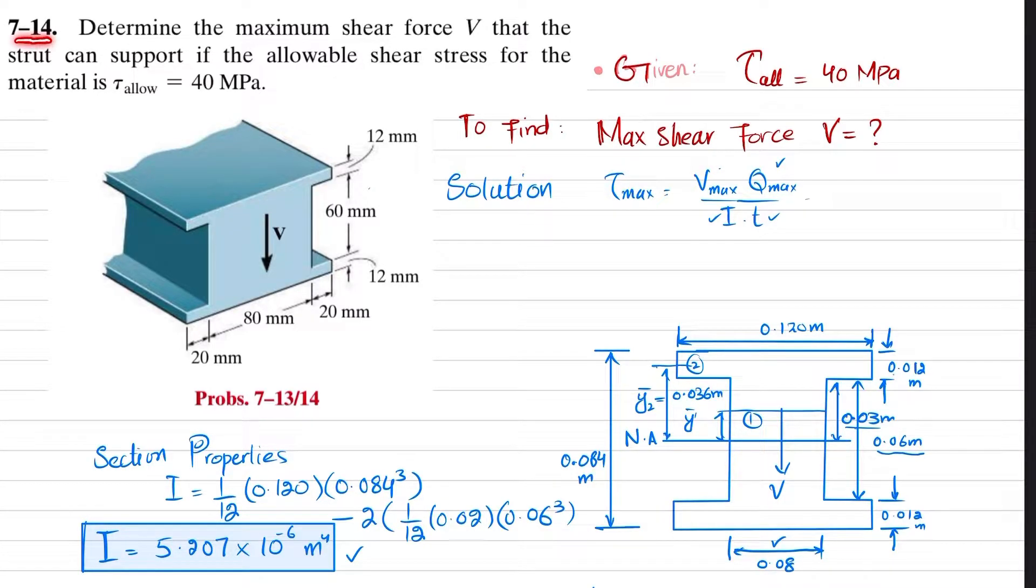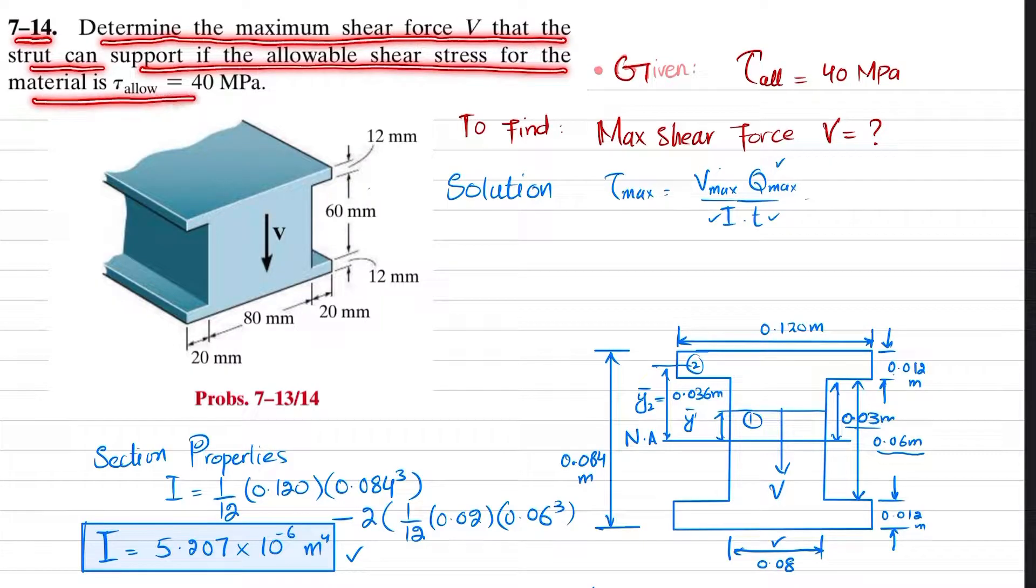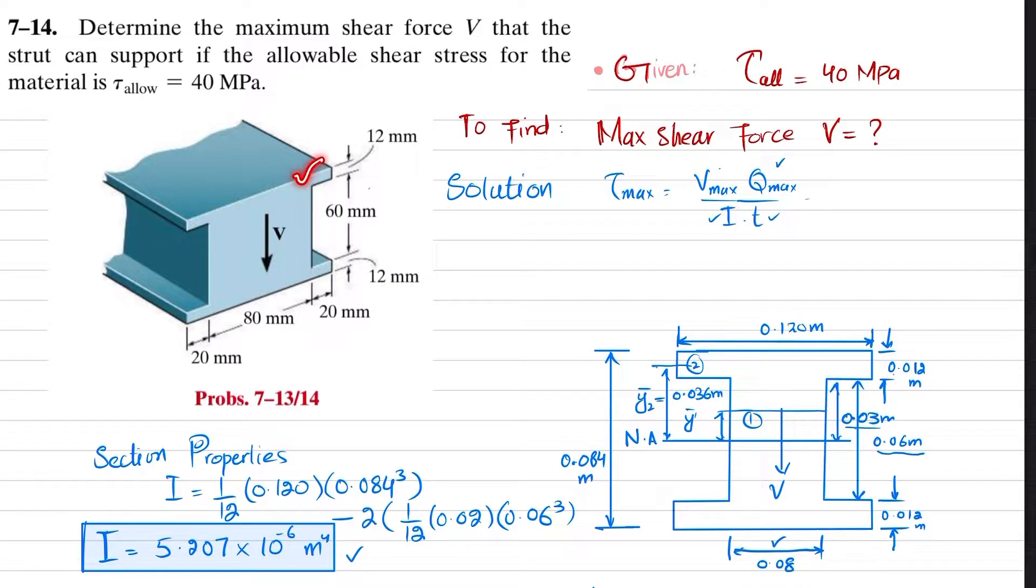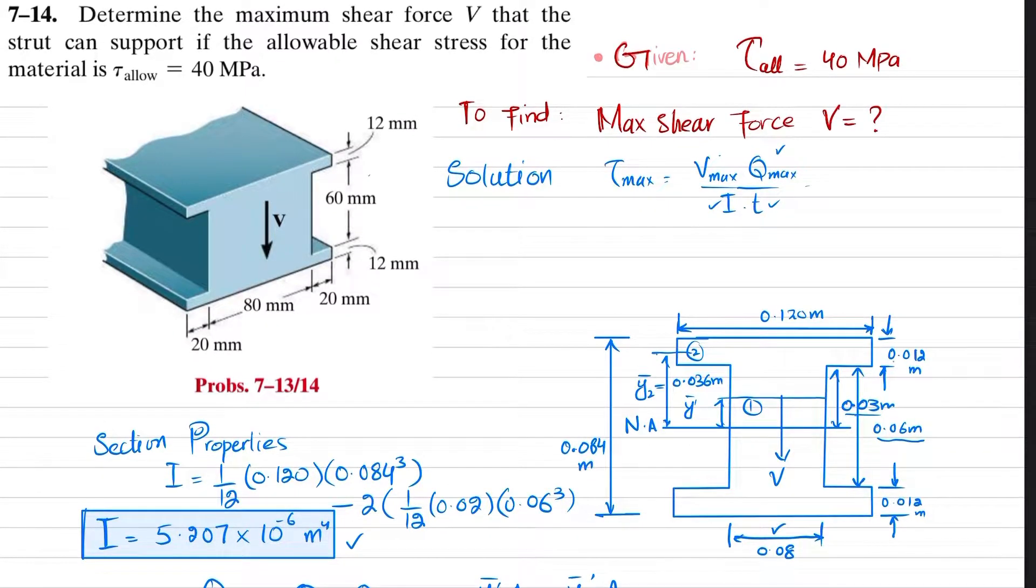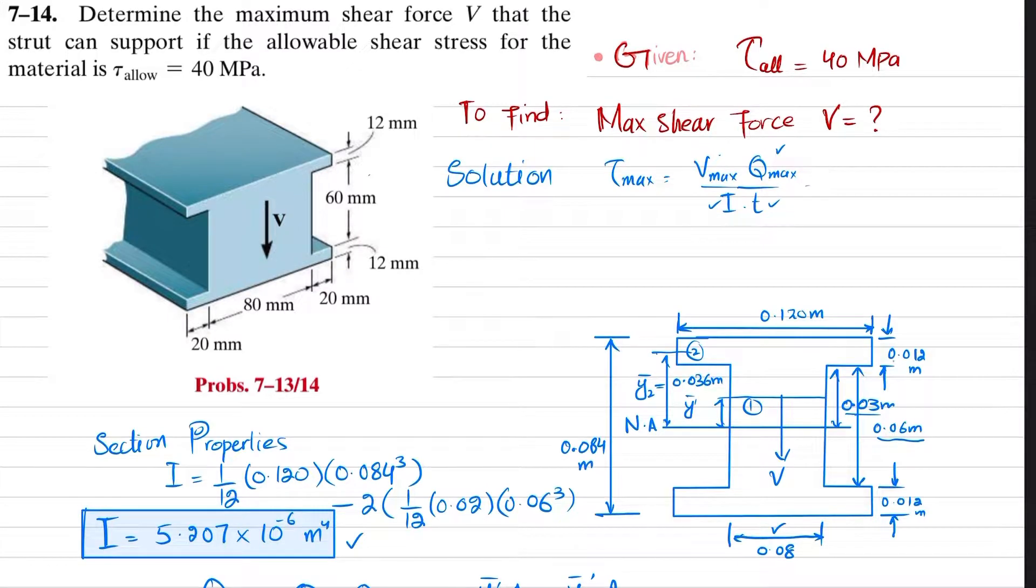Welcome back to Problem 7-14. Determine the maximum shear force V that the strut can support if the allowable shear stress for the material is 40 megapascals. You can see the cross-section of the strut with all dimensions given. This question is a continuation of Problem 7-13, which I have already solved.